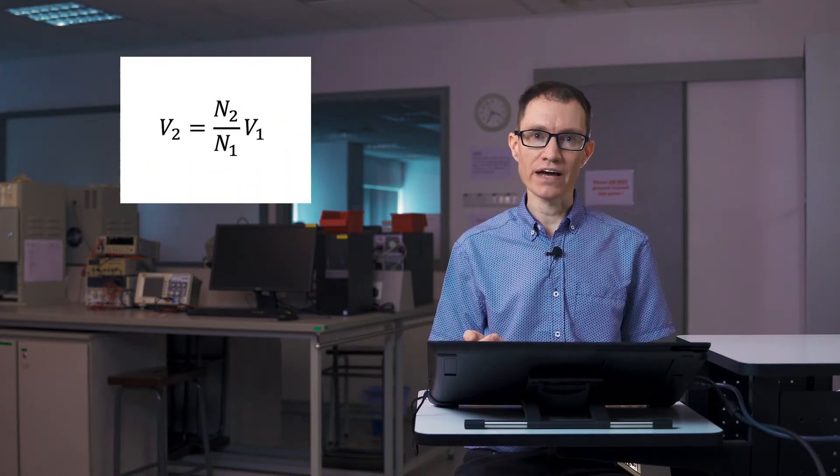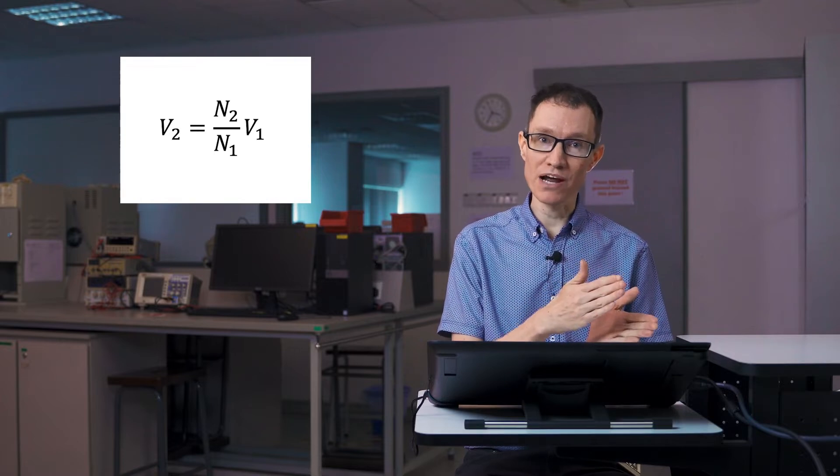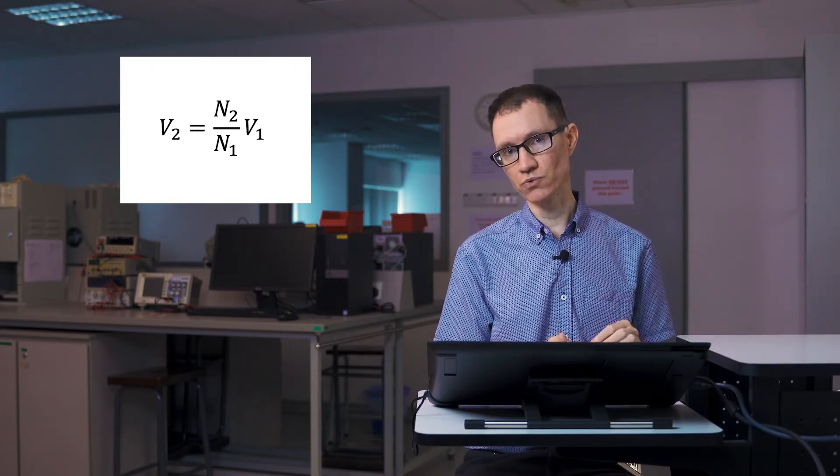On the secondary side of a transformer is usually a load, and it's usually the case that if you load down the transformer more, or you ask more current of the transformer, then the voltage is not constant. If you look at the equation, it gives the impression that as long as the input voltage to the primary is constant, then the output voltage should be constant too with respect to current. But that's not normally the case.